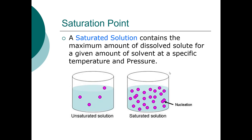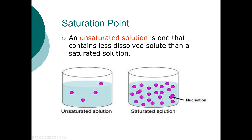A saturated solution contains the maximum amount of dissolved solid for a given amount of solvent at a specific temperature and pressure. Temperature can change this: ice cold water dissolves a certain amount of sugar, but heating the water toward boiling lets you dissolve much more. In an unsaturated solution you haven't reached the limit yet, so you can still add more solute; in a saturated solution you cannot.